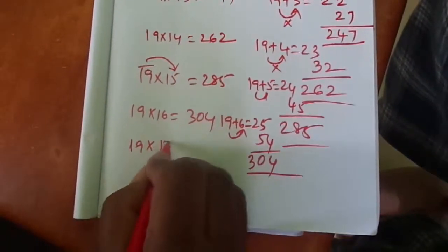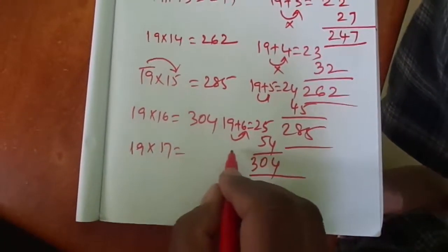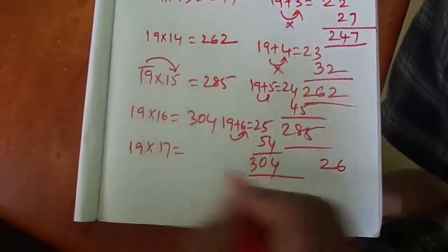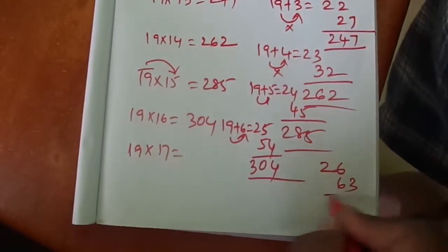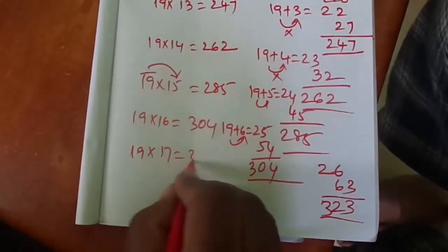19 × 17: 19 plus 7, the answer is 26. 9 multiplied by 7 is 63. 26 plus 63, you get the answer 323.